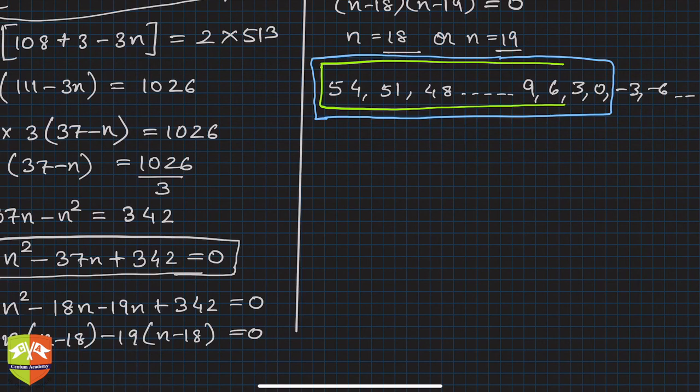Sum of these many terms, whatever is the value of n, and the next term if you're adding is 0, so sum is not getting impacted since there is a 0 here. Hence you can see the sum remains the same. If you see till 3, these are 18 terms, and till 0, these are 19 terms.